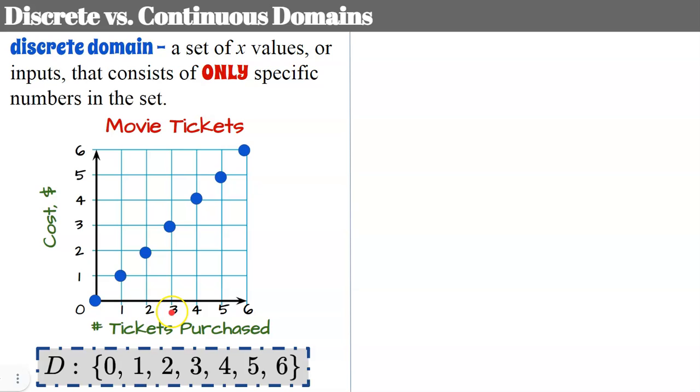So in this case, our domain is the set of numbers zero, one, two, three, four, five, six. If you wanted, you could put dot, dot, dot in here saying that you could buy more than six tickets. It's just not represented on this graph. And I haven't been given a function rule for this. So I don't know if it's going to stop at six and that is the most I can buy or not. So because I haven't been given a function rule, I'm going to close this set off at six.